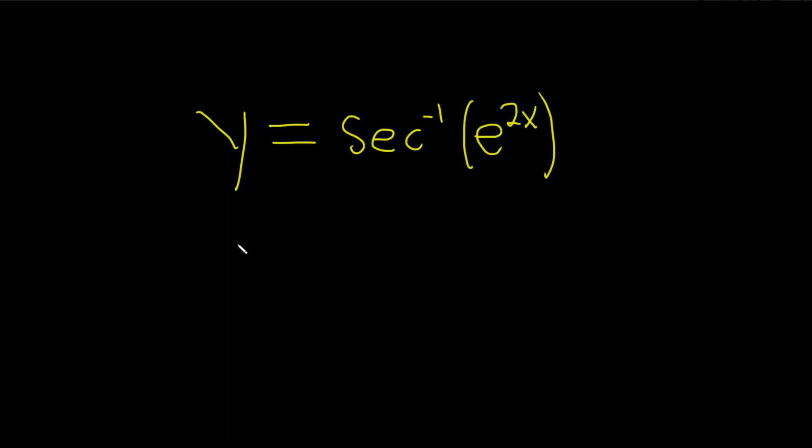Hi everyone, in this problem we have to find the derivative of this function. So y equals secant inverse of e to the 2x.